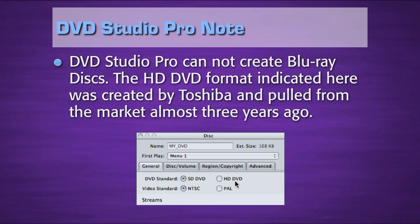A quick note: DVD Studio Pro cannot create Blu-ray discs. The HD DVD format indicated in the inspector inside DVD Studio Pro was created by Toshiba and pulled from the market almost three years ago. So if you're using DVD Studio Pro, you are by definition creating a standard definition DVD. To create a high-def DVD, you have to use a program other than DVD Studio Pro.